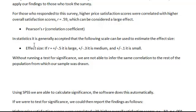In statistics, it's generally accepted that the following scale can be used to estimate effect size. If you have a Pearson's R correlation right around 0.5, positive or negative, it would be considered a large effect. A 0.3 would be a medium effect, and a 0.1 would be a small effect. This is just to give you some bearing on which to judge your finding when we get to that point.